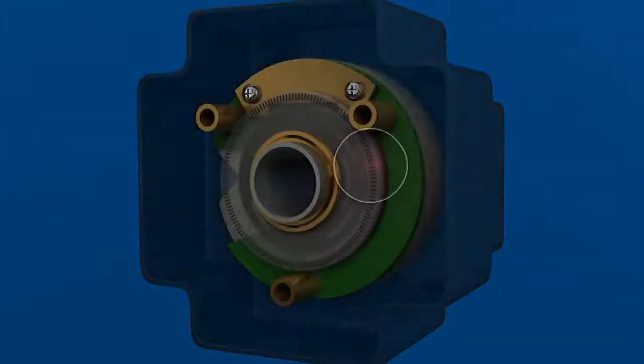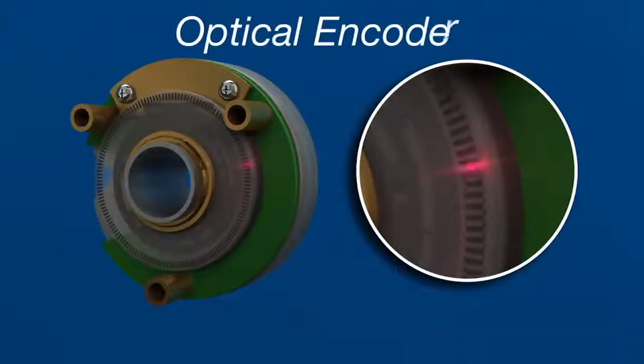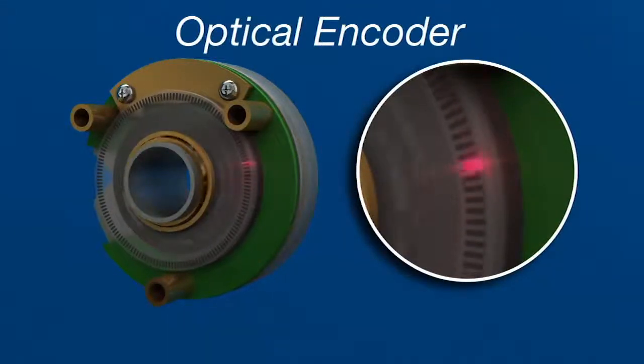Now, this is an example of an optical encoder. It's a disc mounted on the motor shaft. As the motor rotates, small photosensors detect lines on the disc.